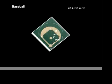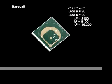Using the Pythagorean Theorem, we know that A squared plus B squared is equal to C squared. Thus, 90 squared plus 90 squared is equal to C squared. Since 90 squared is 8,100, then 8,100 plus 8,100 is equal to 16,200. Then C squared would equal 16,200.